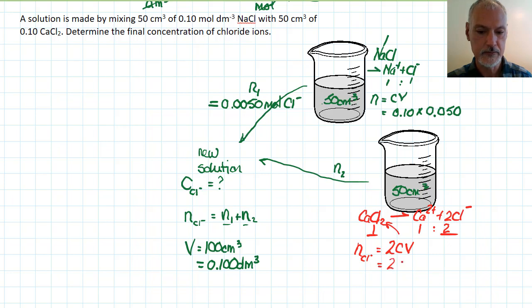So 2 times my 0.10 times my volume converted into liters or decimeters cubed. That gives me the number of moles of this material then as 0.010 moles.